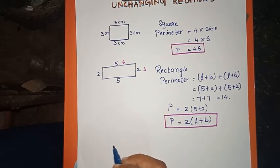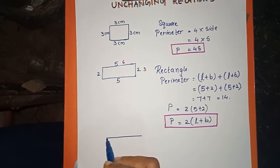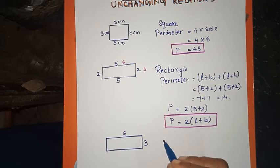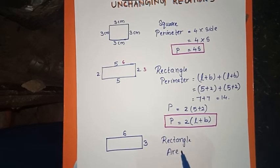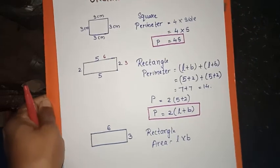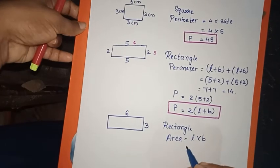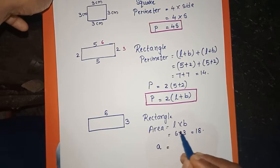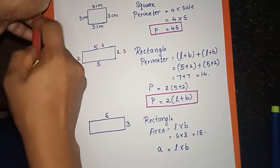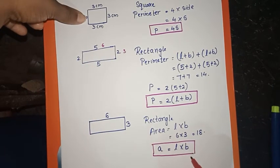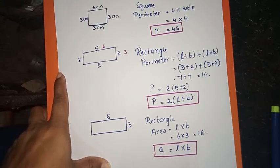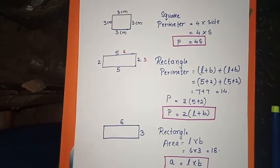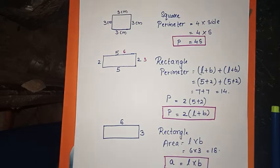Now let's look at the area of a rectangle. The area A is equal to L into B. We write three short forms and a formula: A is equal to L into B.